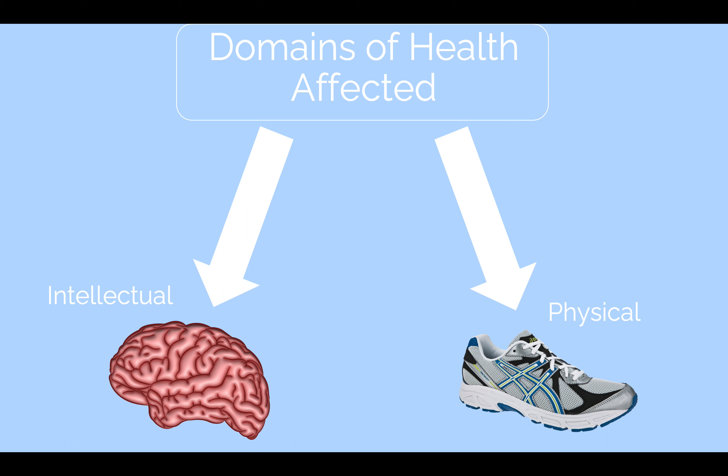Now for students with vision problems, the domains of health that are most affected would be intellectual and physical. For intellectual, if students are having difficulty seeing, it may be harder to grasp visual concepts and retain information such as reading, writing, spelling, and math. For physical, the student's eye health and basic functioning is involved, therefore it's a physical domain.